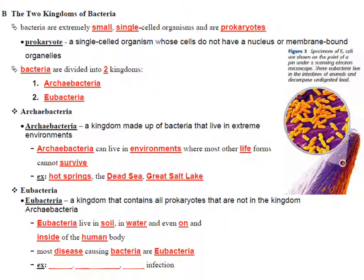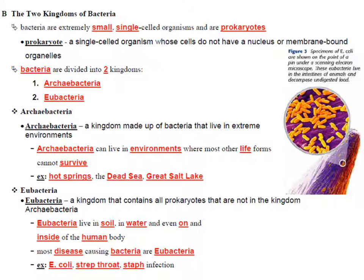Examples of disease-causing bacteria in the kingdom eubacteria include E. coli, streptococcus — which causes strep throat — and staphylococcus, which causes staph infections. A microscopic view of the head of a pin shows bacteria visible on its surface.